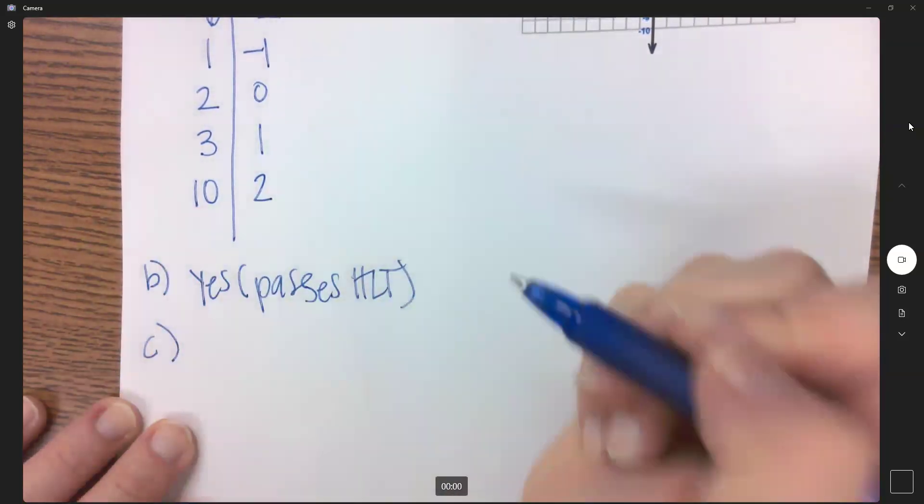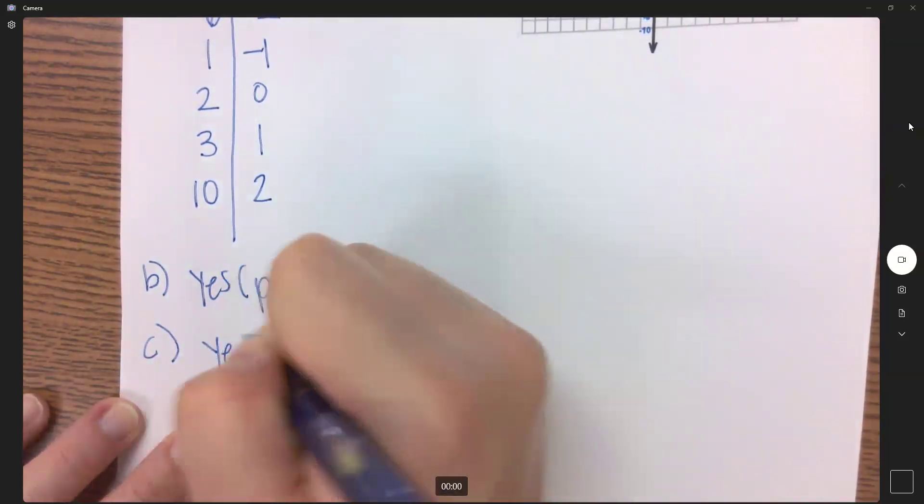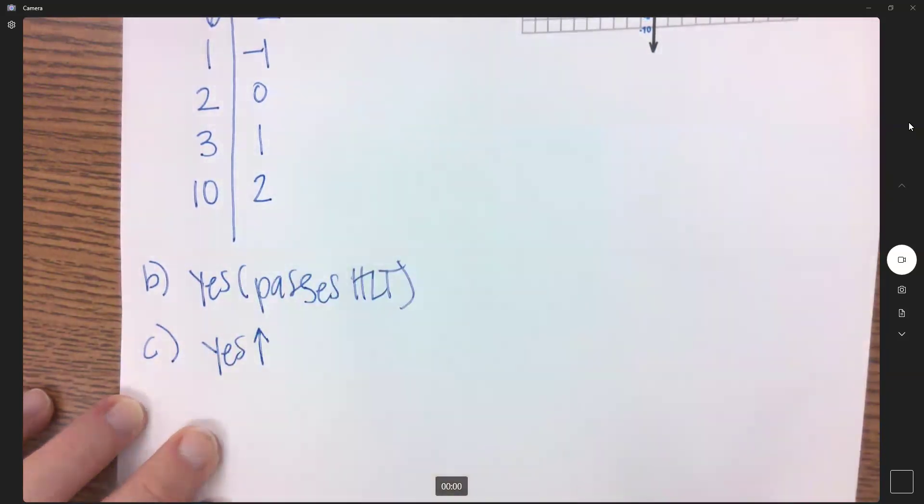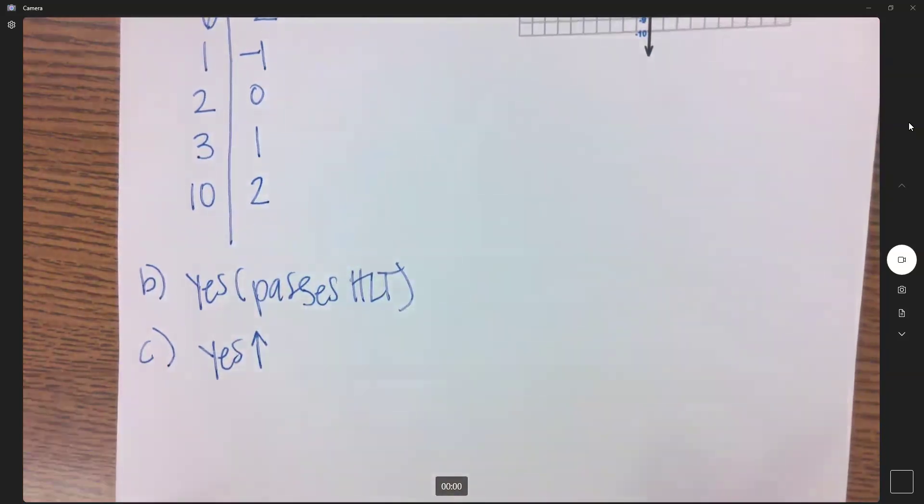And then part C wants to know, does it have an inverse? That's going to be yes as well. If it is one-to-one, then yes, it has an inverse.